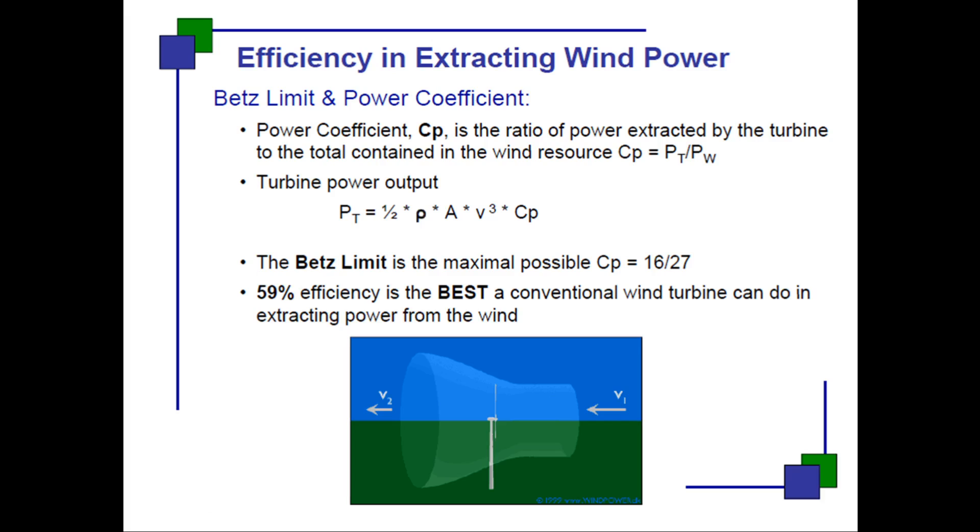How much efficiently you can extract wind power is governed or limited by Betz's limit. The power coefficient - now you just understand - is a ratio of power extracted by the turbine to the total contained power in the wind resource. That is the power coefficient: how much power is extracted from the total available power in the wind. Pt by Pw - Pt is power extracted by the turbine, t stands for turbine, and Pw is available power in the wind. Turbine power output is half rho Av cubed times Cp.